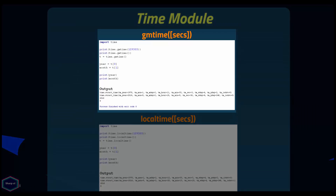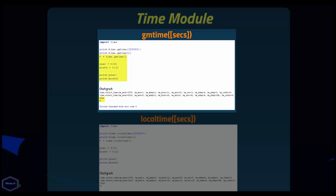The gmtime() function takes an optional argument which must be a valid epoch value and converts it into a time tuple expressing UTC time. If no argument is given, gmtime() returns the current UTC time. You can also extract a single value from a time tuple by using an index, as shown in this example.